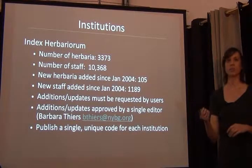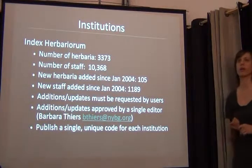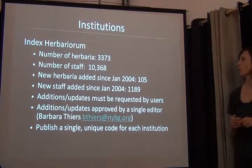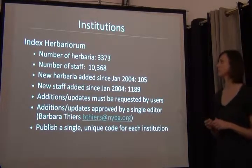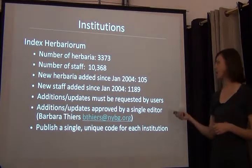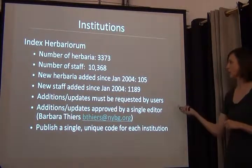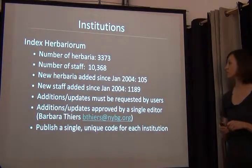Institutions is another one. In botany we have Index Herbariorum, where we standardize all institutions to a single acronym for a collection code. We have over 3,000 herbaria listed with 10,000 staff members, which is constantly being updated. 105 new herbaria have been added since 2004, with 1,100 new staff members since 2004.